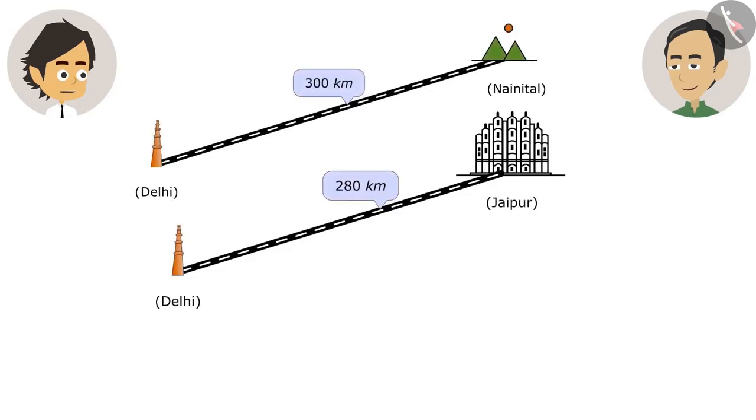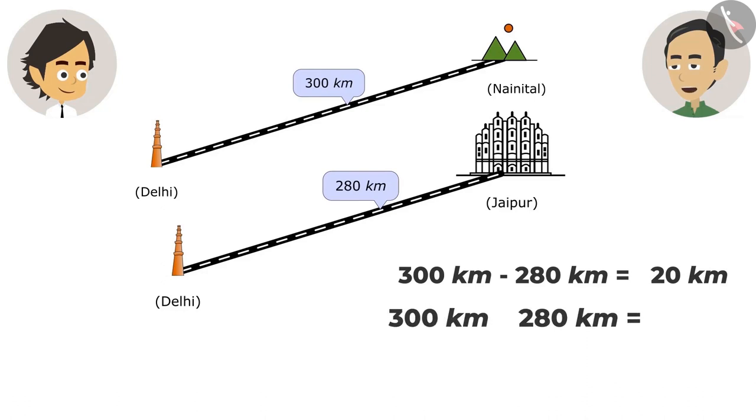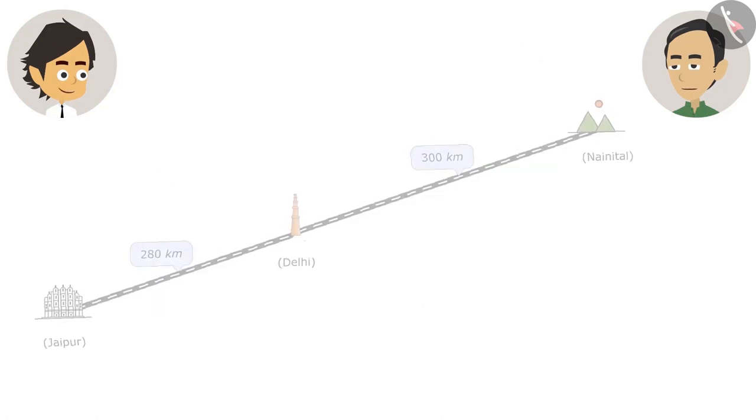Riyanj and I have calculated. Nainital is 300 kilometers and Jaipur is 280 kilometers away. If we subtract both then only 20 kilometers will be left. Yes, but when both are added then it's 580 kilometers. Yes, but why add?